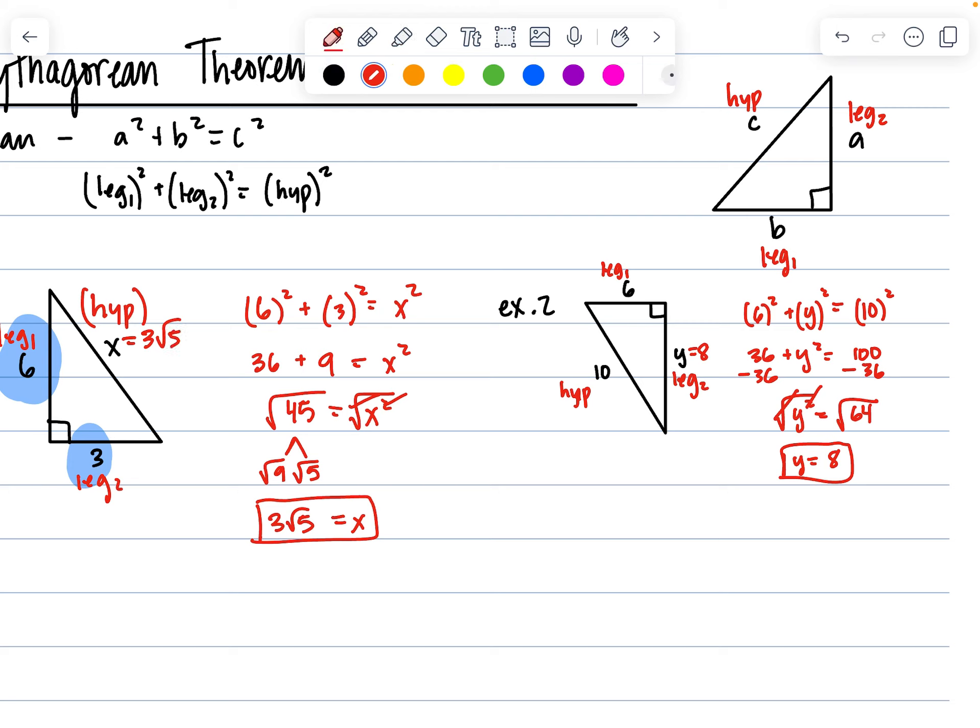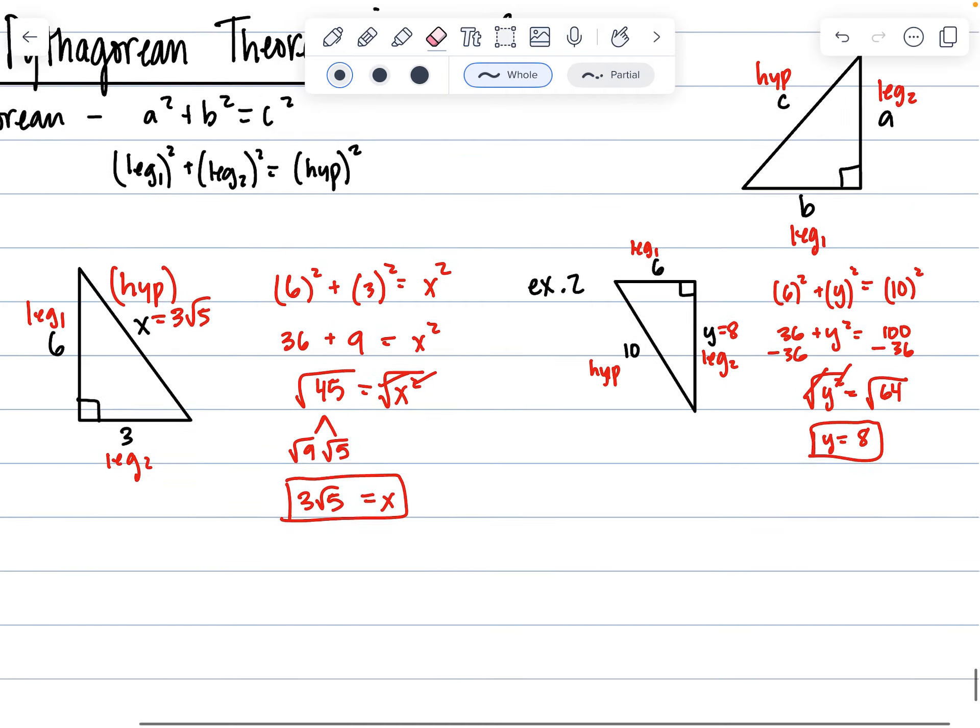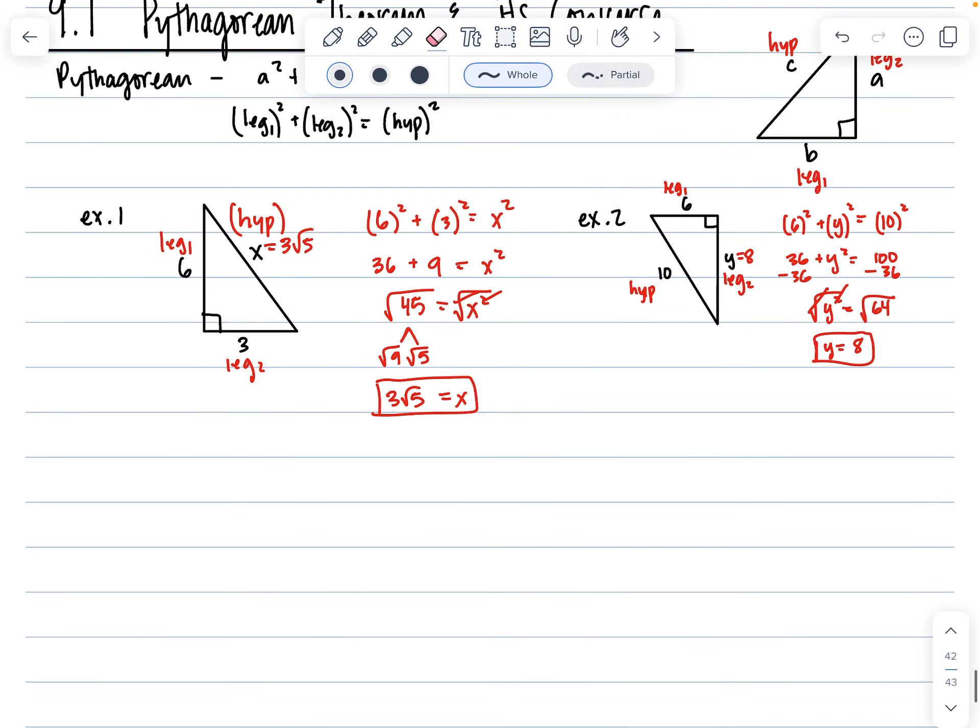When we have example two where all of them turn out to be whole numbers, we call those very special triangles. We call those Pythagorean triples. A Pythagorean triple refers to triangles whose sides are all whole numbers.